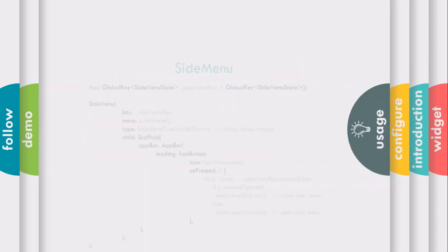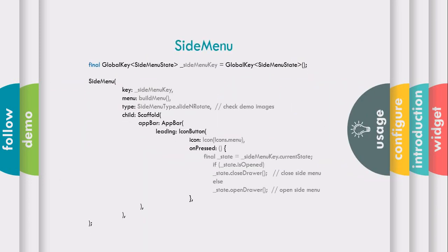The syntax of the side menu is like this. First, we have to define the side menu key to maintain the current state of the side menu. The side menu has four main parameters. First, its key to maintain its current state. Second, menu, which will contain a list of items, or you can say a list of menu items.